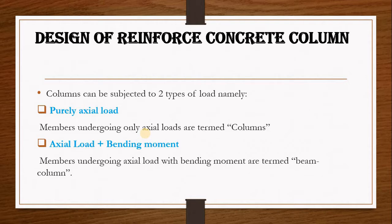Before you can properly design a reinforced concrete column, you first need to know the type of load a column is going to be subjected to. A column can be subjected to two types of load. The first type is purely axial load — this is when the members are undergoing only axial load. We call these columns, and it is basically when we have just the gravity load acting on the column.